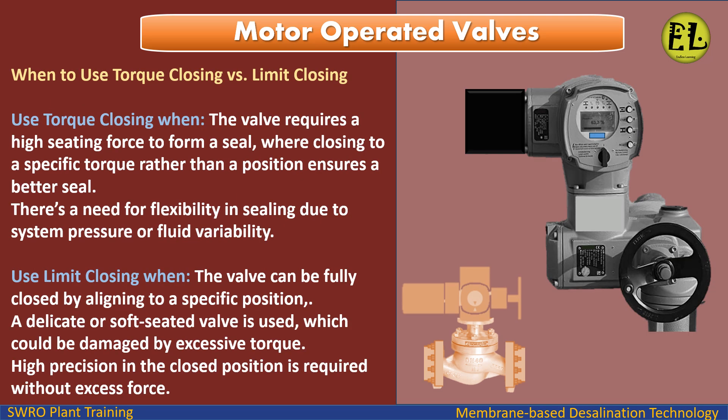When to use torque closing versus limit closing: Use torque closing when the valve requires a high seating force to form a seal, where closing to a specific torque rather than a position ensures a better seal, or where there is a need for flexibility in sealing due to system pressure or fluid variability. Use limit closing when the valve can be fully closed by aligning to a specific position, or a delicate or soft-seated valve is used which could be damaged by excessive torque, requiring high precision closing.